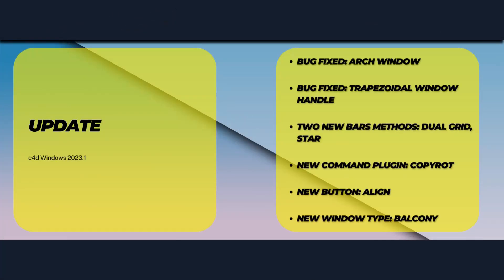In this overview we can see a few things which were updated. First, there was a small bug in the arc window when the two segments were selected — I simply fixed this. There was also a second bug fixed in the trapezoidal window: when you set height two to zero, it melts the second point together with the third point and you get a different window type, with the handlebars ending up somewhere off the window.